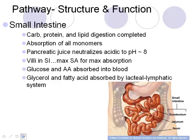The small intestine is where everything happens. This is where carbohydrates, proteins, and lipids are all completely digested and then absorbed as monomers — glucose, amino acids, glycerol, and fatty acids — into the bloodstream. Because the incoming chyme is very acidic, the pancreas secretes juice that neutralizes the pH; the small intestine should be around pH 8 to 8.5.